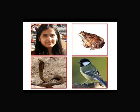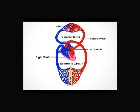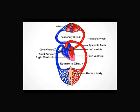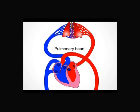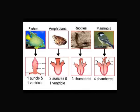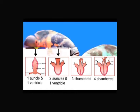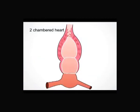In higher animals — amphibians to mammals — blood from the heart is sent to the lungs, and from the lungs it is sent back to the heart, from where it is pumped to the body organs. This is called double circuit circulation, and the heart is a pulmonary heart. Let us now study the circulation of blood in each of these organisms, starting with fishes.